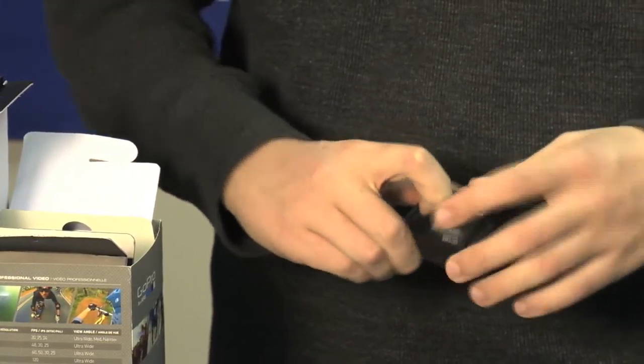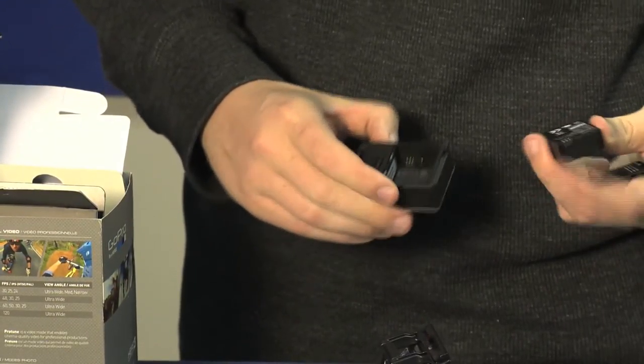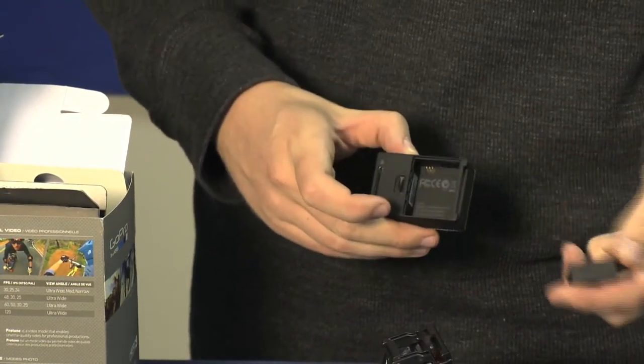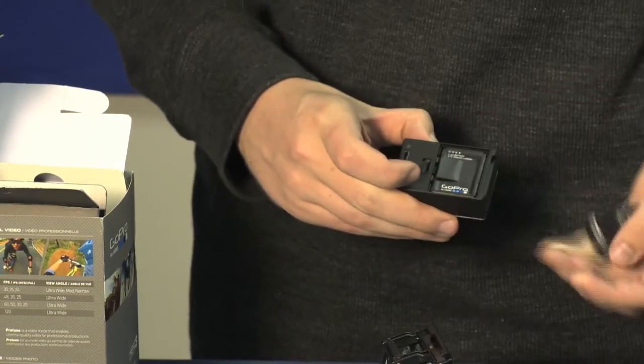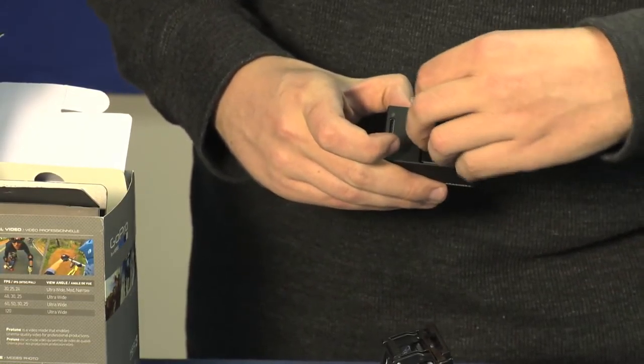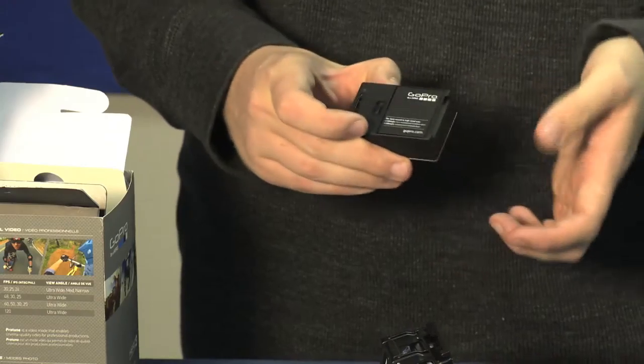Battery compartment on the back. Just push the lever to pop it open. Line up the contacts. Battery just drops right in and you stick the door back on like that.